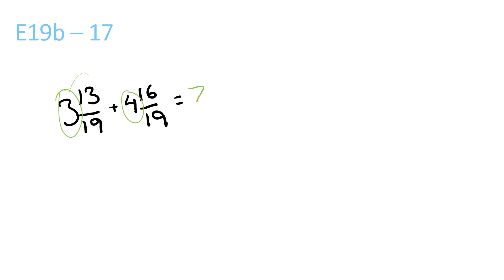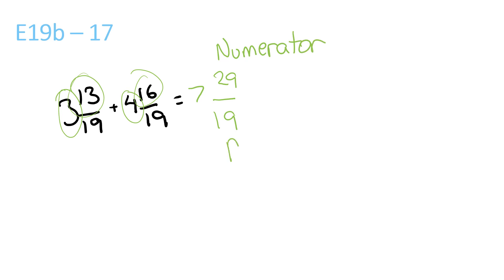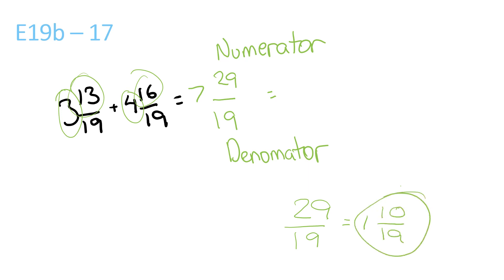3 plus 4 is 7. 13 plus 16 is 29 over 19. The numerator is the top one and the denominator is the bottom one — and the numerator is higher. So 29 over 19 — 19 goes into 29 once with a remainder of 10 over 19. You have 1 and 10 over 19 plus 7, which will be 8 and 10 over 19.